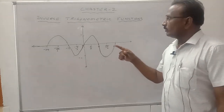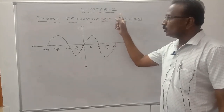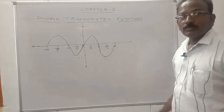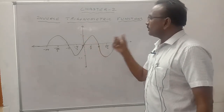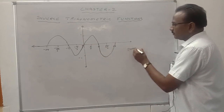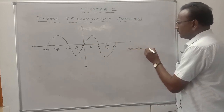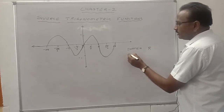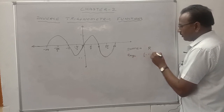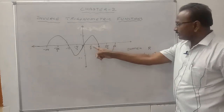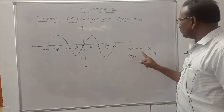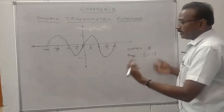Today we discuss Chapter 2: Inverse Trigonometric Functions. We know the graph of the sine function. The domain of sine function is the set of all real numbers, and the range is the closed interval minus 1 to 1.